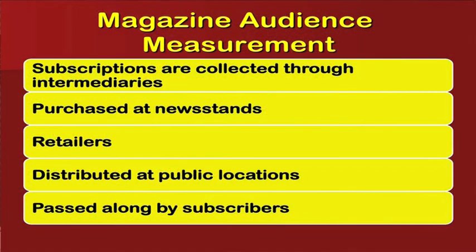Magazine audience measurement: subscriptions are collected through intermediaries — purchased newspapers at newsstands from retailers, distributed at public locations, and passed along by subscribers. Magazine audiences can be tested: if subscriptions are high, the ads will obviously be successful because a larger public is investing to buy. If people have invested even 50 rupees to buy a magazine, it shows they are connected to it and to the advertisements. The number of subscriptions achieved through retailers and public stands gives a measurable figure.